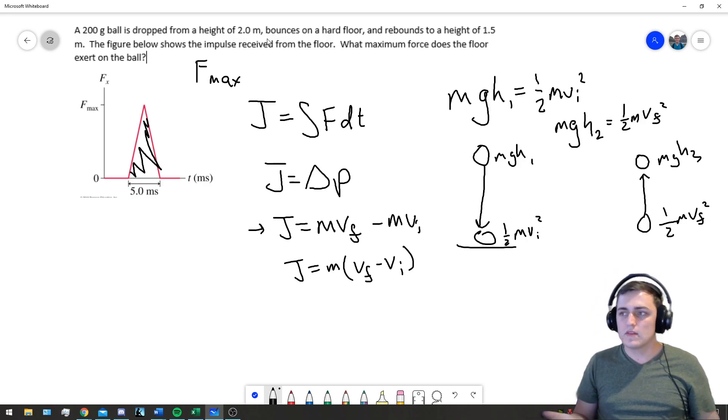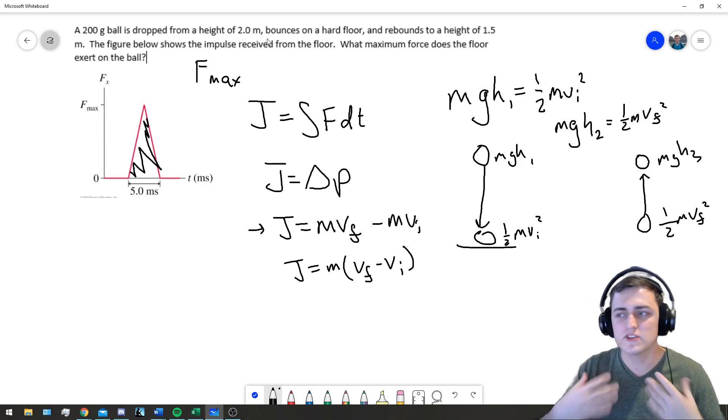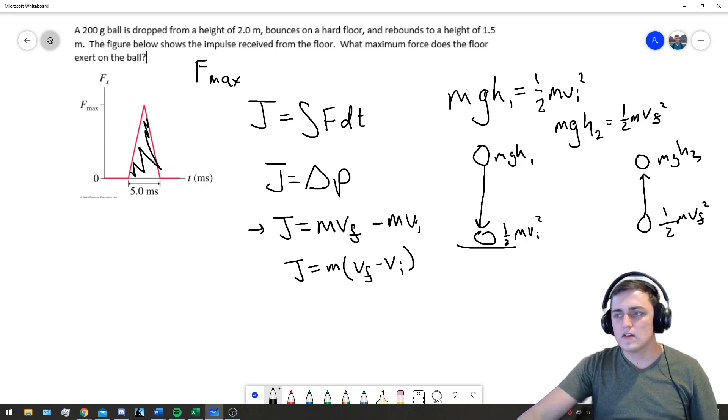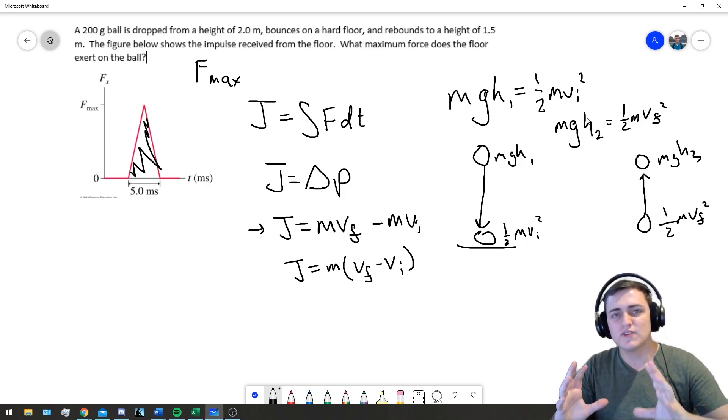We start with two meters of height and that's all converted into kinetic energy. We have a given kinetic energy, we can find our V. To find our V_final, we look at it comes back up to one and a half meters, so our H_2 is one and a half meters.